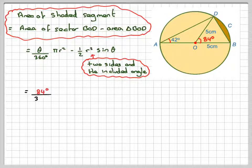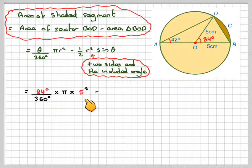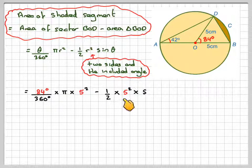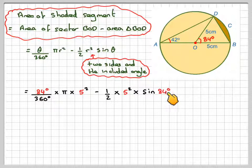Putting in the information, we have 84 over 360 times π times 5 squared, minus a half times 5 squared times the sin of 84 degrees.